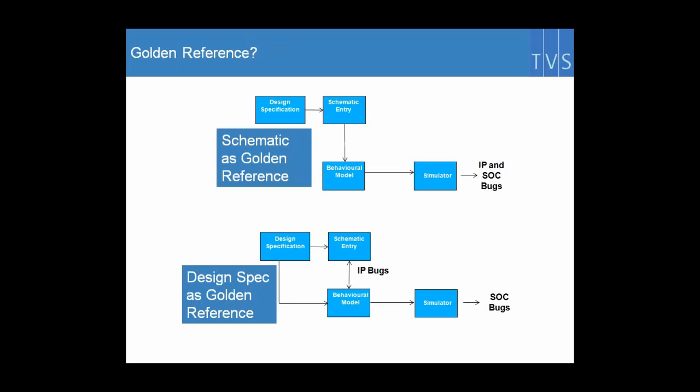When you have developed your behavioral model from your schematic entry, you will be detecting both IP-level bugs and SoC-level bugs only in simulation. But if model development is done with respect to a design spec and a comparison is made with the schematic entry, you can have a head start on verification while the schematic is still being developed. You can find IP-level bugs while comparing your model with the schematic, and SoC-level bugs in the simulator.